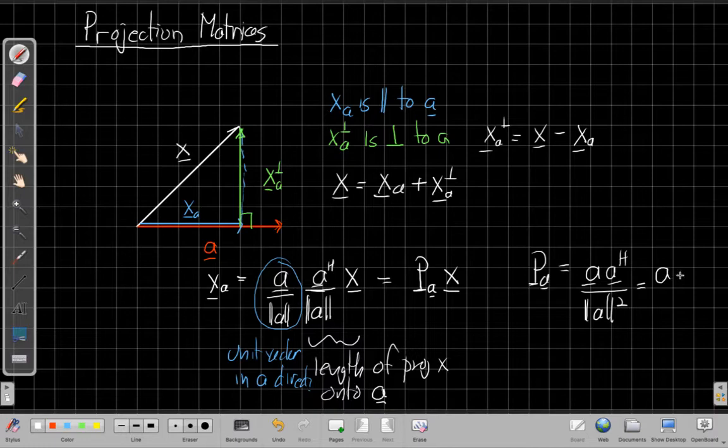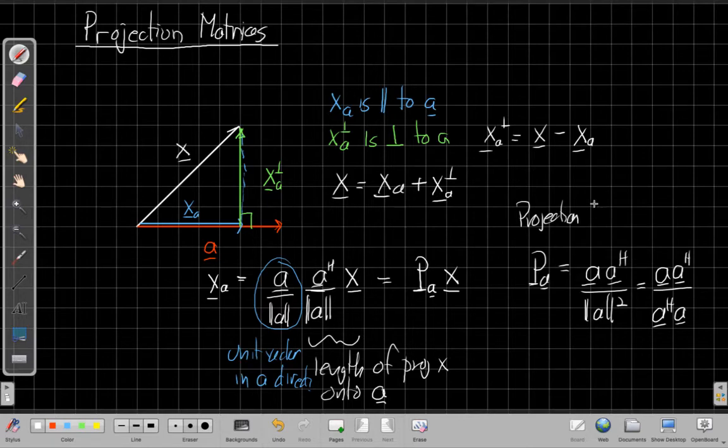And we'll see there's a convenient reason if we think about multiple constraints later to also think of this, I can write magnitude of a squared as the inner product of a with itself. So this is what we call the projection matrix in the a direction.